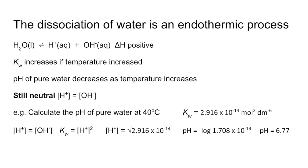So we square root the value given in the question and then minus log for the pH and we get 6.77. Just beware that the water is not acidic. It's still neutral because the hydrogen ion concentration and the hydroxide ion concentration are still the same.